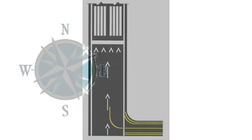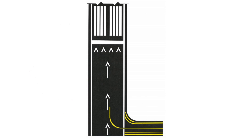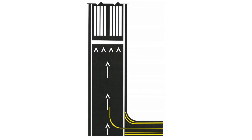When there are arrows pointing before the runway threshold markings as shown, this indicates a displaced threshold. According to the Aeronautical Information Manual, the portion of runway behind a displaced threshold is available for takeoffs in either direction and landings from the opposite direction.